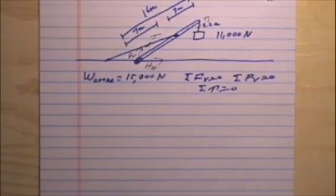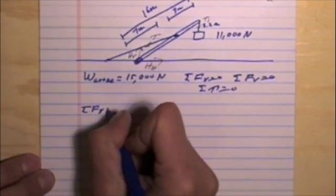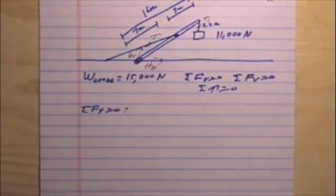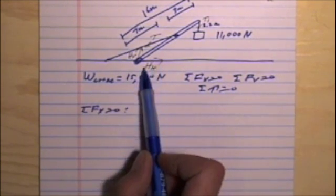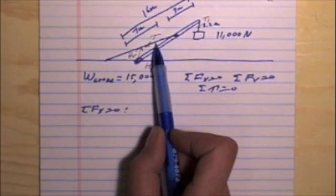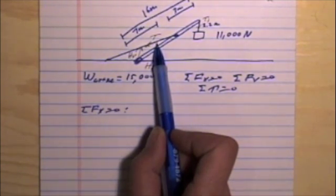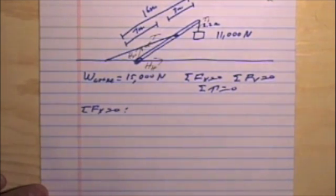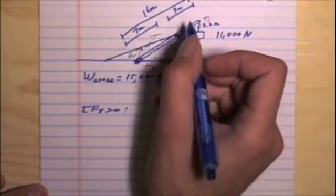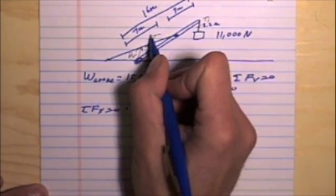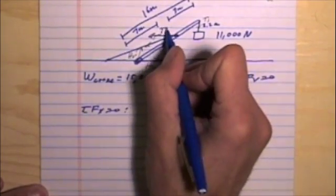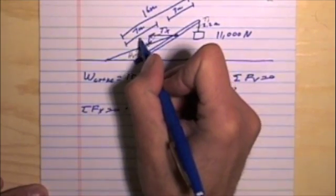Let's start by summing the X forces on the crane and setting those equal to zero. The X forces are the horizontal hinge force pointing to the right, and there's also going to be a component of the tension pointing to the left, along the X axis. So I need to set up some geometry. The tension has a horizontal component T sub X and a downward vertical component T sub Y.